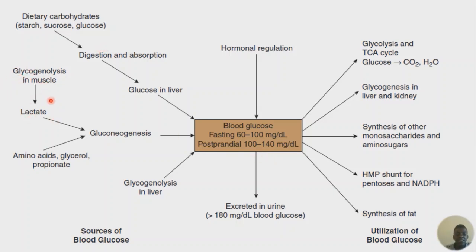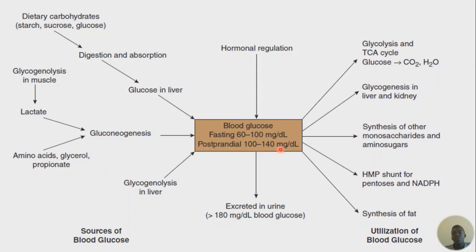Glycogenolysis in the muscle gives us lactate; this lactate through gluconeogenesis generates glucose. Amino acids, glycerol, and propionate also undergo gluconeogenesis in the liver hepatocytes and are converted to glucose. Glycogenolysis — breaking down stored glycogen in the liver — also releases glucose. All this produced glucose raises blood glucose. Fasting blood glucose is 70 to 110 mg/dL; after eating it is around 100 to 140 mg/dL.